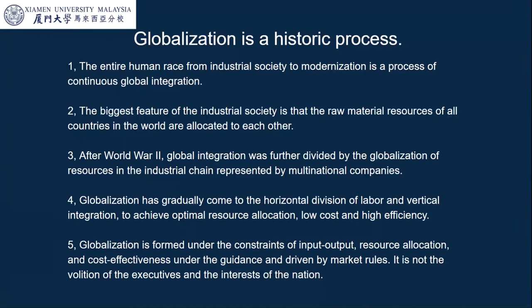The biggest feature of industrial society is that the raw material resources of all countries in the world are complementary to each other — minerals, industry, agricultural products, and markets — and everyone can exchange. After World War II, global integration was further driven by multinational companies. If a product has a hundred parts, each part is made by the world's best producer of that kind of part, ensuring good quality, efficiency, and low cost.